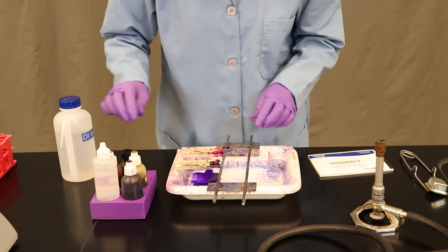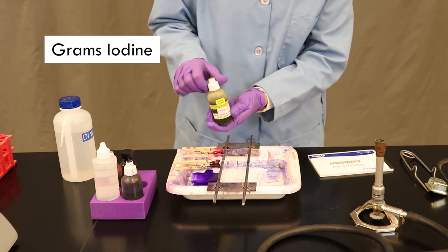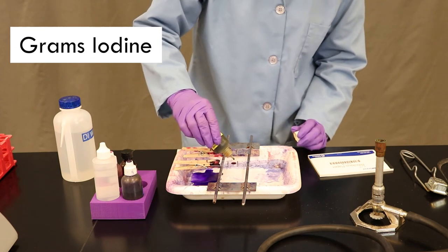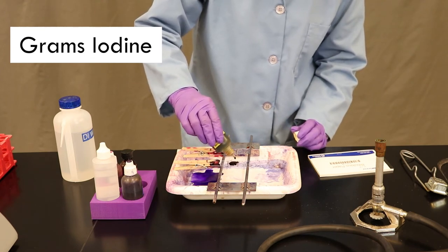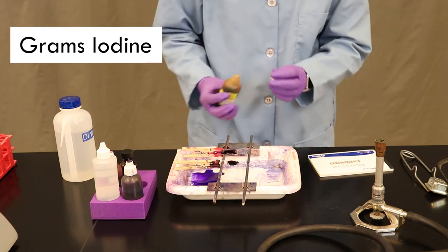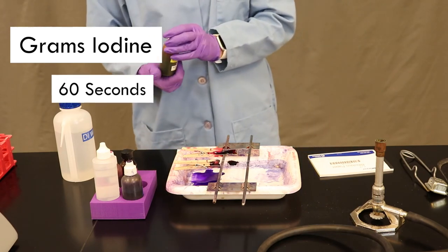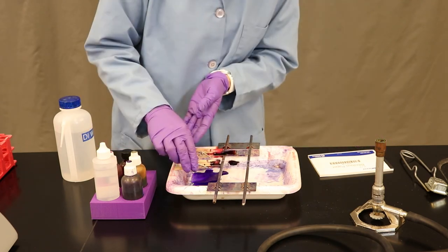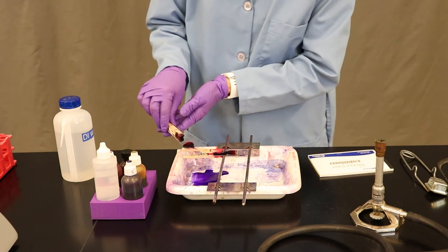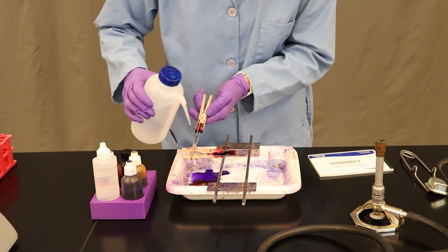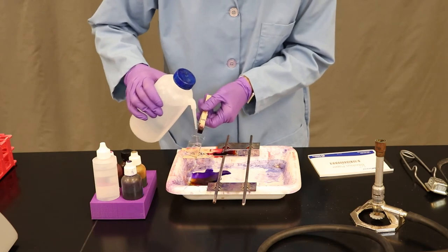The second chemical we're going to apply is called Gram's iodine, or the mordant. Again, flood the slide where your bacteria is located and apply the stain for no longer than 60 seconds. Once your 60 seconds has passed, rinse again with DI water until your droplets are clear coming off of the glass slide.